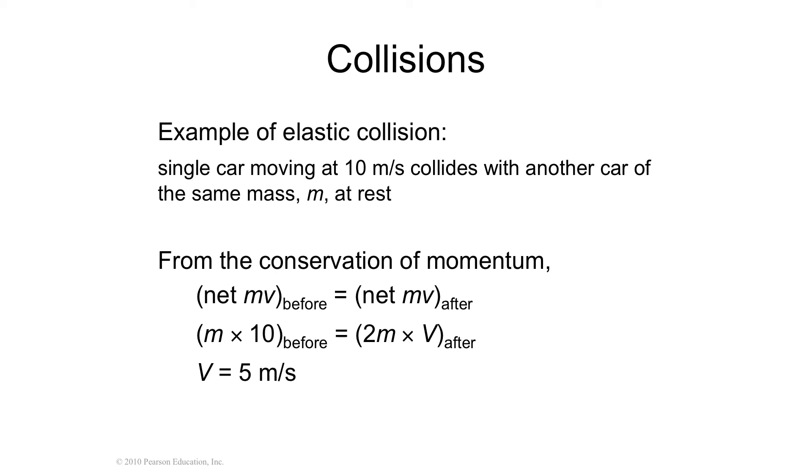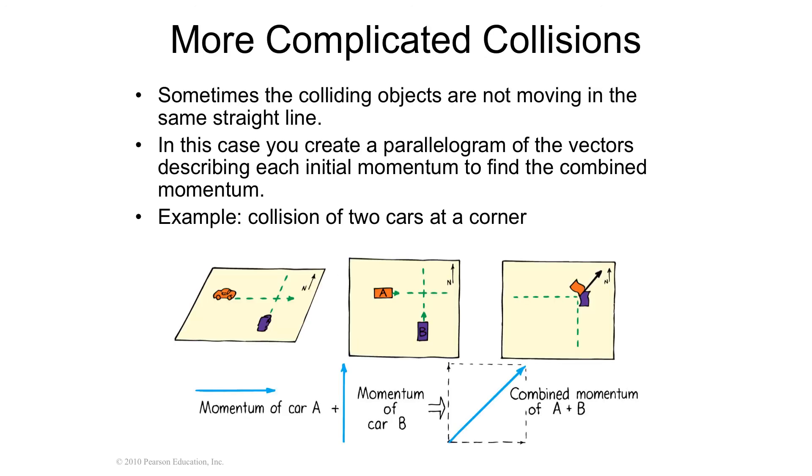Right? So you're going to have 10M, and then when you divide by 2M, you'll end up with 5 meters per second, and that's how fast it's going to go. So in order to carry twice as much mass, it's going to go half a speed.